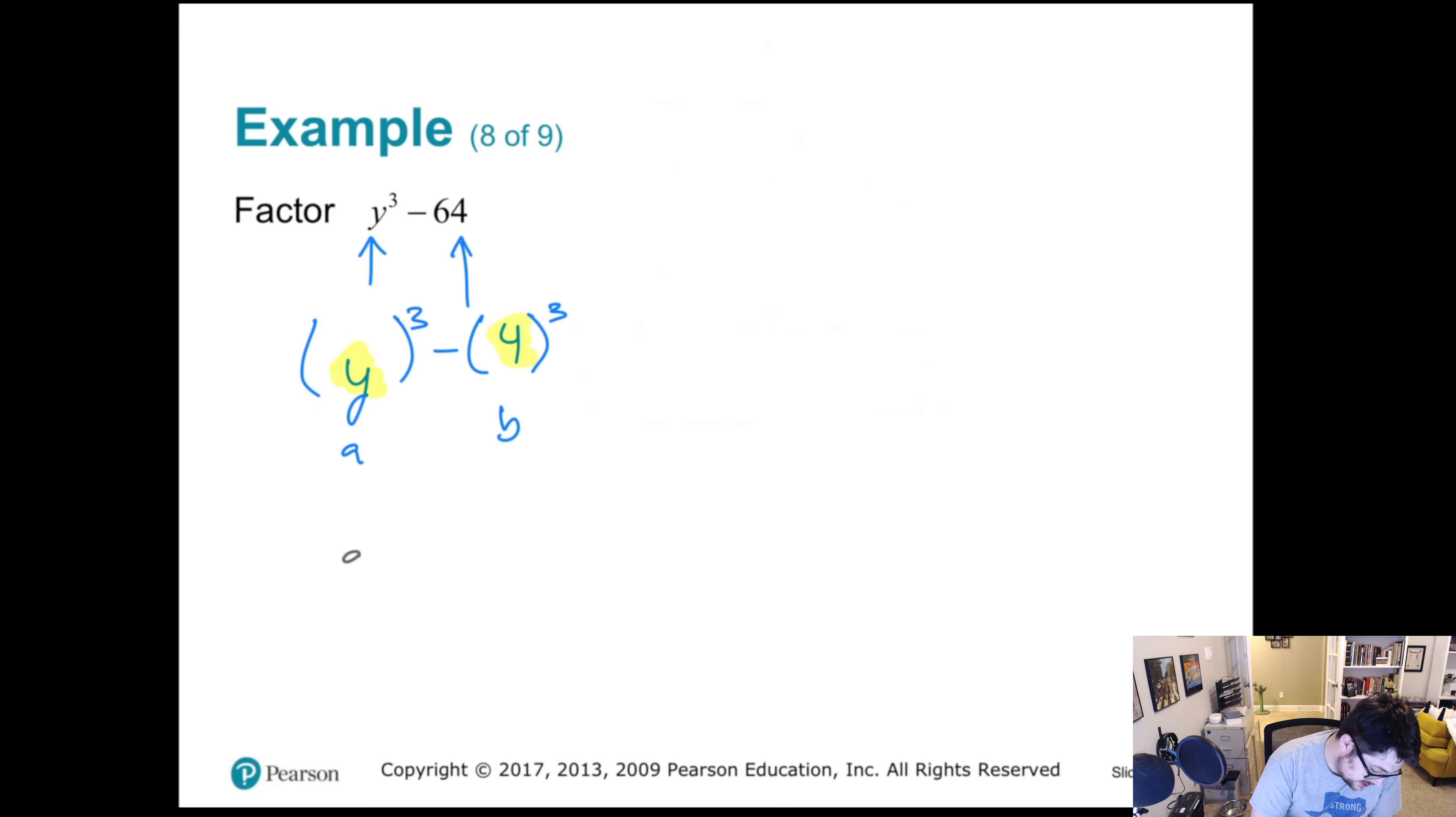And again, our formula is a³ - b³ equals (a - b) times (a² + ab + b²). So let's go ahead and plug this in. So what we have is our a first, a is y. Now our b, our b is 4. Then a squared, so our a is y, so y² plus a times b, so in our case y times 4, which is 4y. And then b squared, so 4 squared, which is 16. And that's really it.